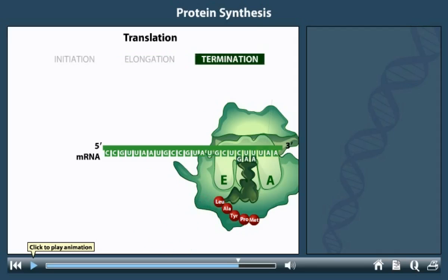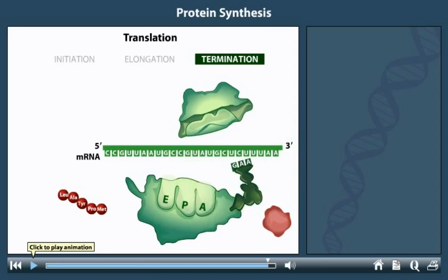Translation is terminated when a stop codon, in this case UAA, enters the A site. Stop codons do not encode amino acids or bind tRNA molecules. Rather, they bind a protein release factor, which allows hydrolysis of the bond between the polypeptide chain and the tRNA in the P site. The various components of translation then dissociate from each other.